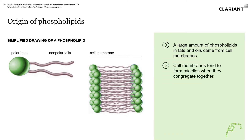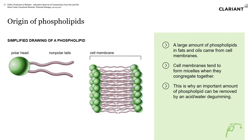Looking at the origin of phospholipids — a simplified drawing shows a non-polar tail and a polar head; they tend to form micelles. A large amount of the phospholipids come from cell membranes and migrate together to form micelles. Many of these can be removed by the acid water degumming process to remove the hydratable phospholipids, but the non-hydratable phospholipids will remain behind with the oil, and those are the ones that need to be removed with an adsorbent.